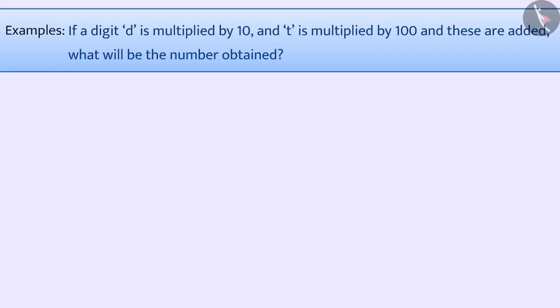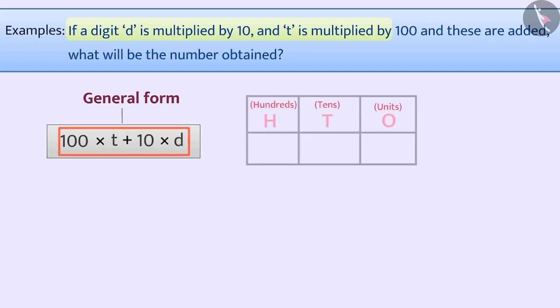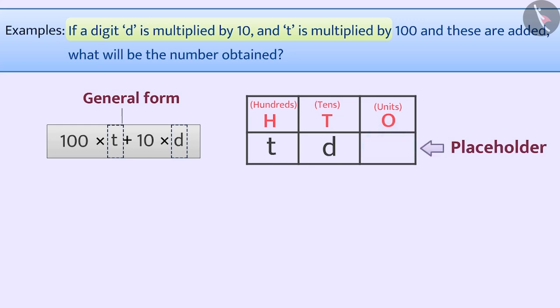Let's find out what the resultant number will be. If the digit D is multiplied by 10, and T by 100, we get a general form of the number: 100 into T, plus 10 into D. In this number, T is at the position of 100, and D is in the position of 10. There is no digit in the unit's place, so we will use the placeholder 0. This will give us the number TD0.